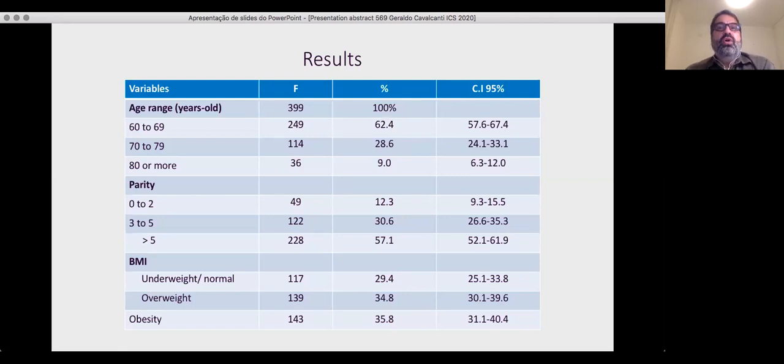Almost 400 volunteers were studied. Only 90% was octogenarian, 57% had more than 5 gestations, and 70% had overweight or obesity.